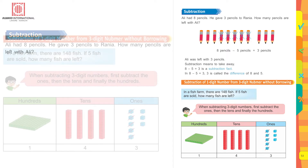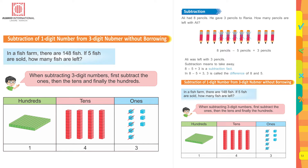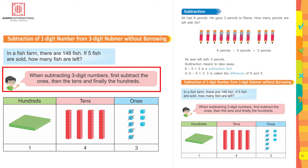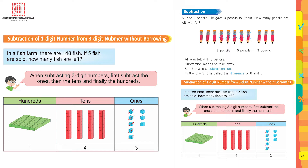Subtraction of one-digit number from three-digit number without borrowing. In a fish farm there are 148 fish. If five fish are sold, how many fish are left? When subtracting three-digit numbers, first subtract the ones, then the tens, and finally the hundreds. There are eight ones, four tens, and one hundred. Subtract five ones from eight: you are left with three ones, four tens, and one hundred. The answer is 143.